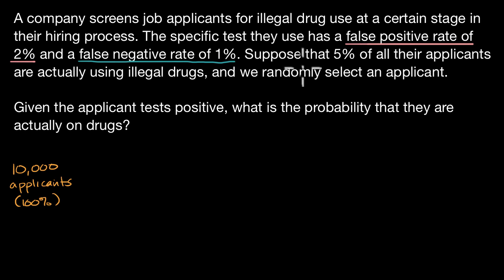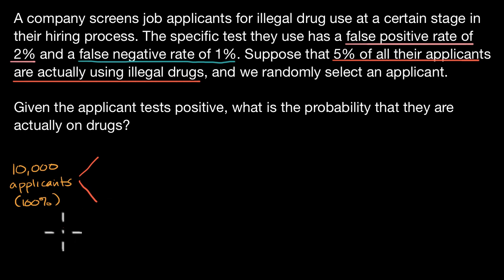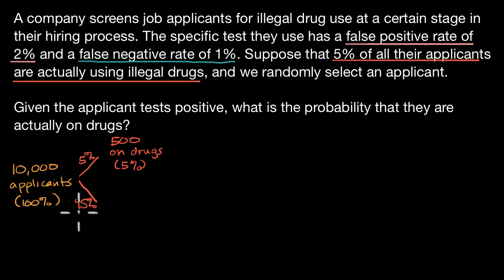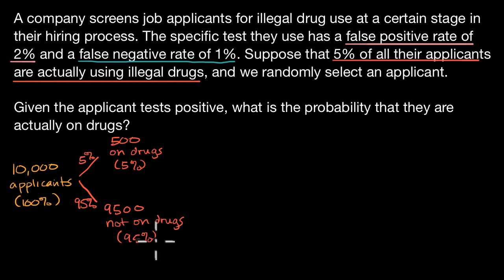Now they give us some crucial information. They tell us that five percent of all their applicants are actually using illegal drugs. So we can immediately break this 10,000 group into the ones that are doing the drugs and the ones that are not. Five percent are actually on the drugs, ninety-five percent are not. Five percent of 10,000 is 500 — so 500 on drugs. And then 9,500 are not on drugs.